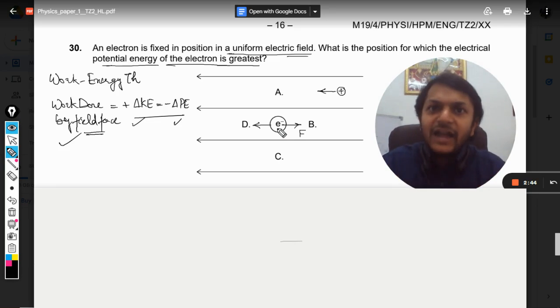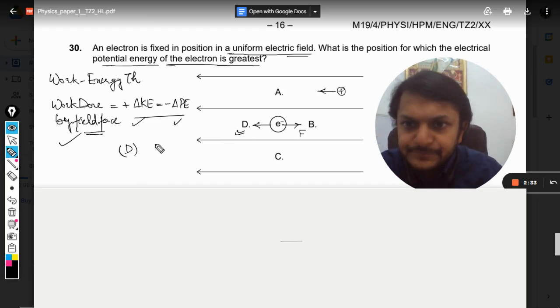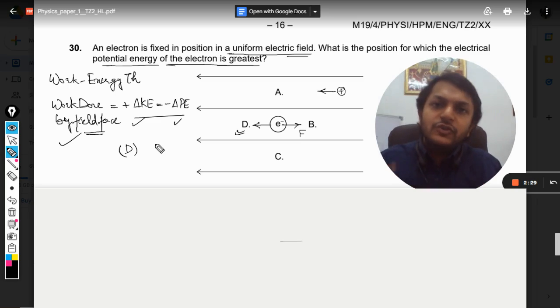So we are doing work. That work is added into the potential energy of the electron. So at this point D, the potential energy will be maximum, so our answer is D. Now this was the first explanation. Now I am going to give you another explanation.